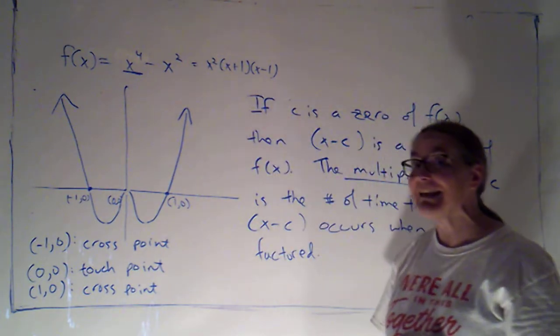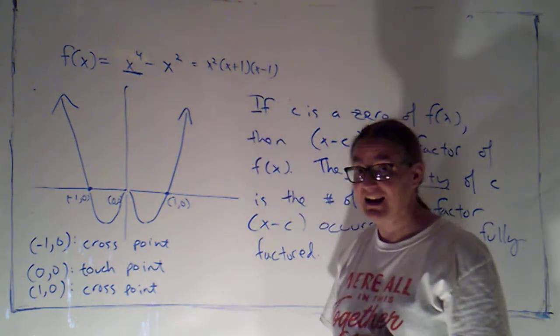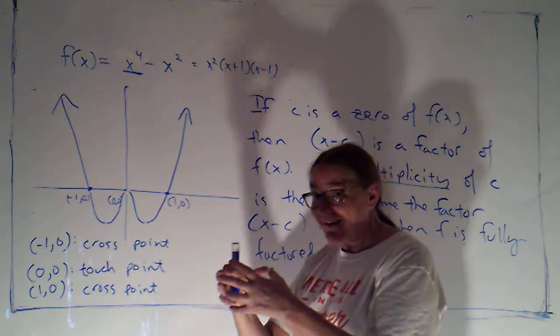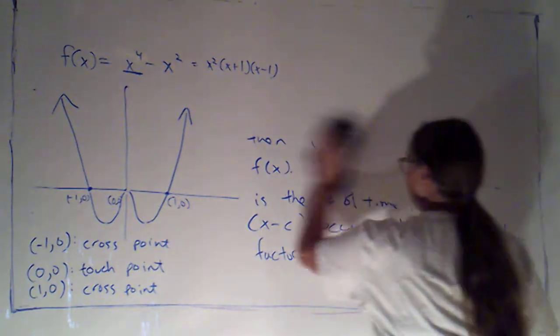But when the multiplicity was 2, which happens to be an even number, even though the factor x changed sign, the x squared stayed positive, and so it didn't change sign.